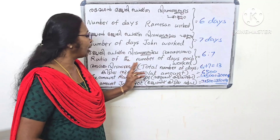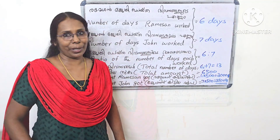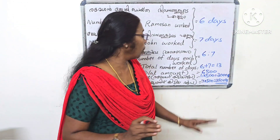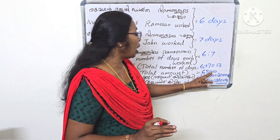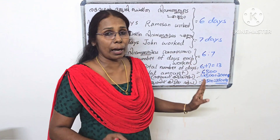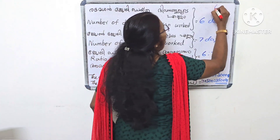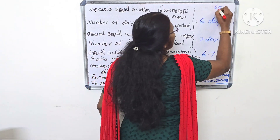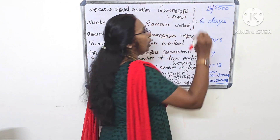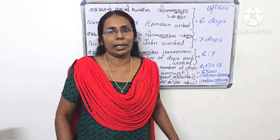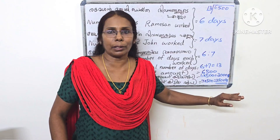The total amount is 6,500 rupees. One question for students: if you have a total of 6,500, you can calculate each share. Remesha gets 6,000 rupees' worth and John gets 7,000 rupees' worth based on the ratio.